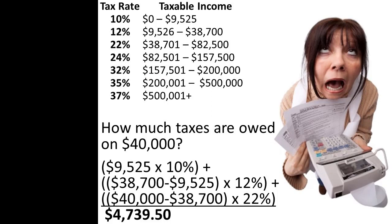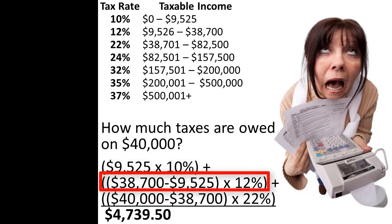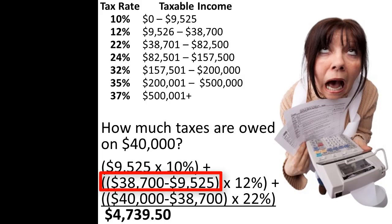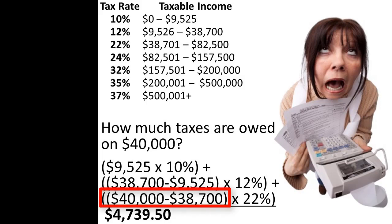As a taxpayer earns more income and moves further up the tax brackets, calculating the income taxes owed requires more steps. For example, a single taxpayer with $40,000 of taxable income would pay a 10% rate on the first $9,525 of income earned, a 12% rate on the next $29,175 earned. This is because $29,175 is the difference between the top of the 12% tax bracket at $38,700 and the top of the 10% tax bracket at $9,525. And finally, a 22% rate on the final $1,300 earned. $1,300 is the amount of the $40,000 taxable income above the top of the 12% tax bracket, which ends at $38,700.